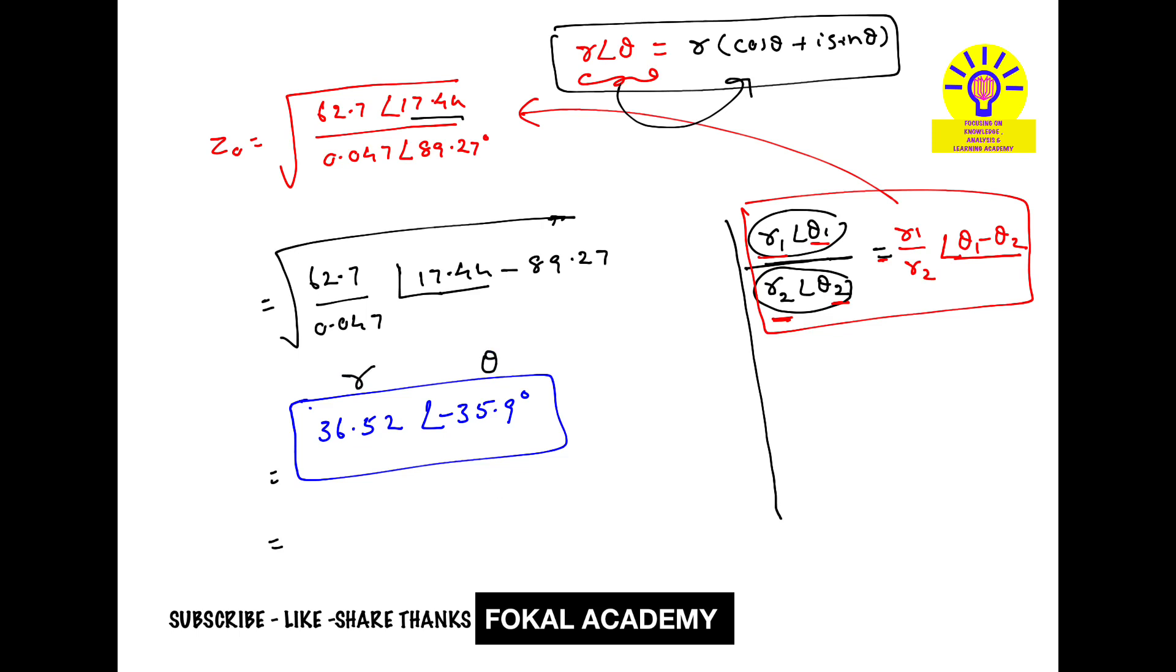Now substitute these values in the equation, and we get 29.6 - j21.4 ohms. Based on the options given in the exam, you can use this formula or you can stop at the previous step. This is the process of simplification. Thanks for watching, please subscribe, like, and share. Thanks!